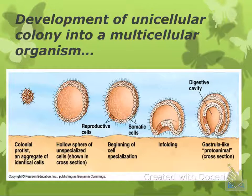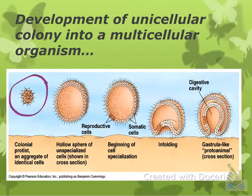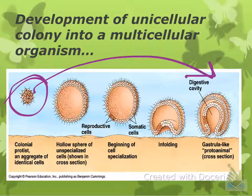So how does a unicellular colony form a multicellular organism? This is just showing you — pause and look at this picture as you go through. You eventually start as a little ball of cells, eventually become this development here, which is kind of like a gastrula, and it has a digestive cavity.